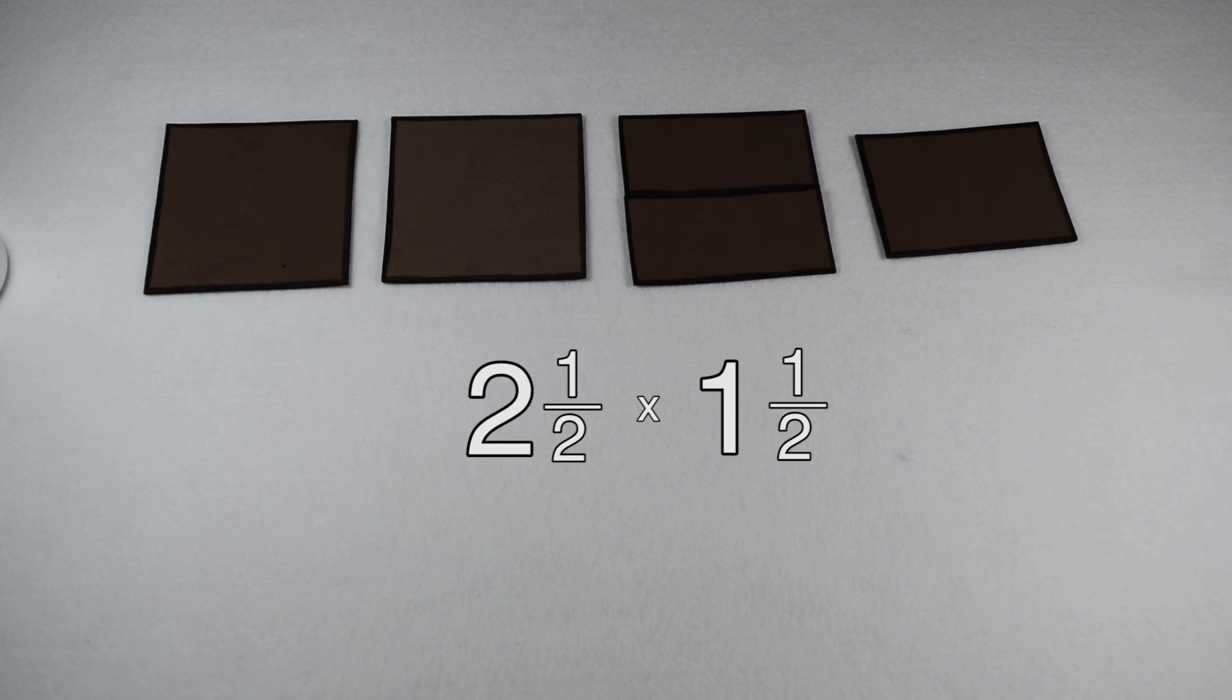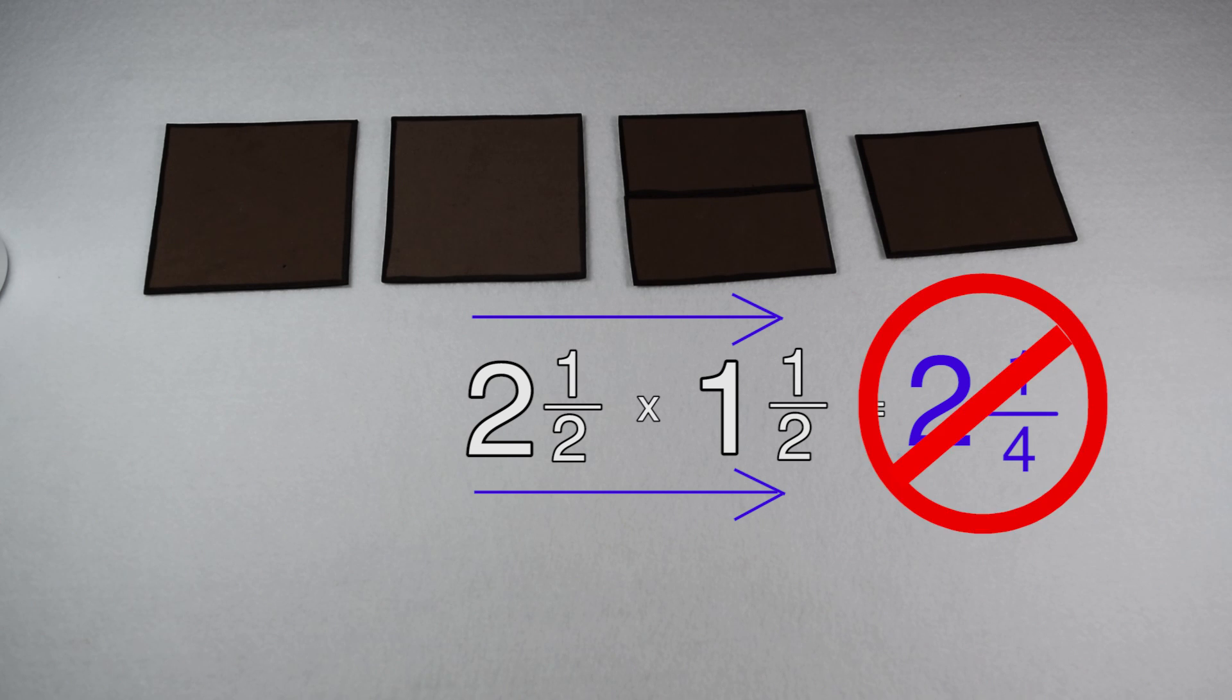Now, a lot of times when people try to multiply mixed numbers, they try to multiply the whole numbers together and then the fractions. If we try to do that, two times one gives me two and one half times one half gives me one-fourth. So if we did it that way, that would say we only had two and a fourth pounds of chocolate. Well, we already know that we should have three and three-fourths, so there must be another way.